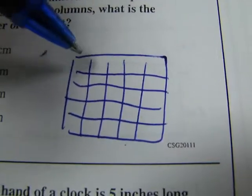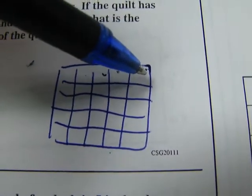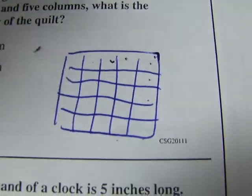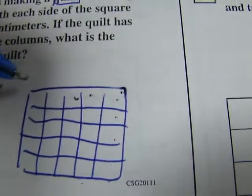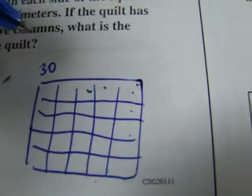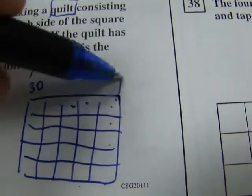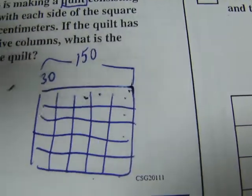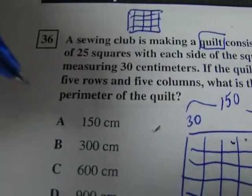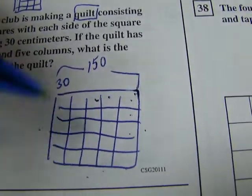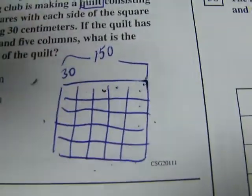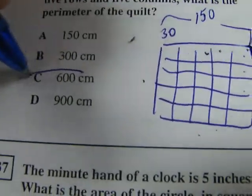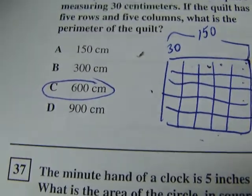So we kind of do this. So this gives us our quilt. See, it's five, one, two, three, four, five, by five. One, two, three, four, five. And each side of each of these squares is 30. So if that's 30, then this distance will be 150. And the question is, what is the perimeter? So it's 150 here. That means it's 150 here, 150 here, and 150 here. So four times 150. Therefore, the answer is 600 centimeters.